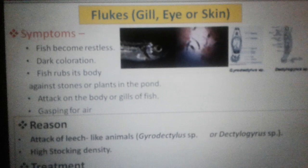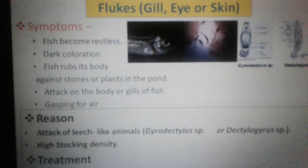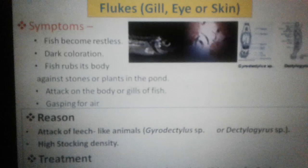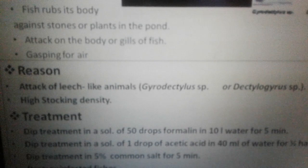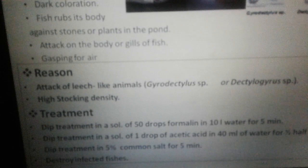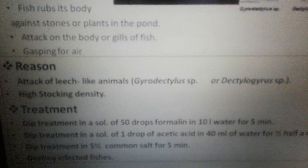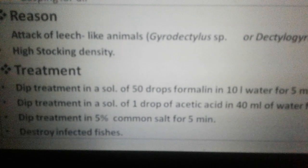Next is fluke. Flukes can attack the gills, eyes, or skin. The fishes become restless, rub their body against the substrate, and gasp for air. The main reason is leech-like organisms such as Gyrodactylus or Dactylogyrus. High stocking density is also a factor. Treatment includes dip treatment by formalin, acetic acid, common salt, or destroying infected fishes.